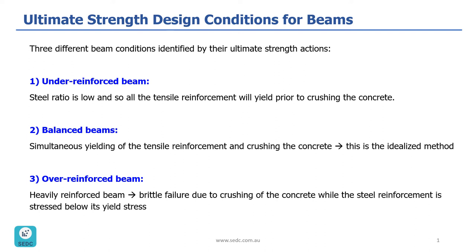We have three different ultimate strength design conditions for beams. The first one is under-reinforced beam, the second one is balanced beam, and the third one is over-reinforced beam. As you can see, the difference between these three conditions is related to the amount of tensile reinforcement we have in the section.